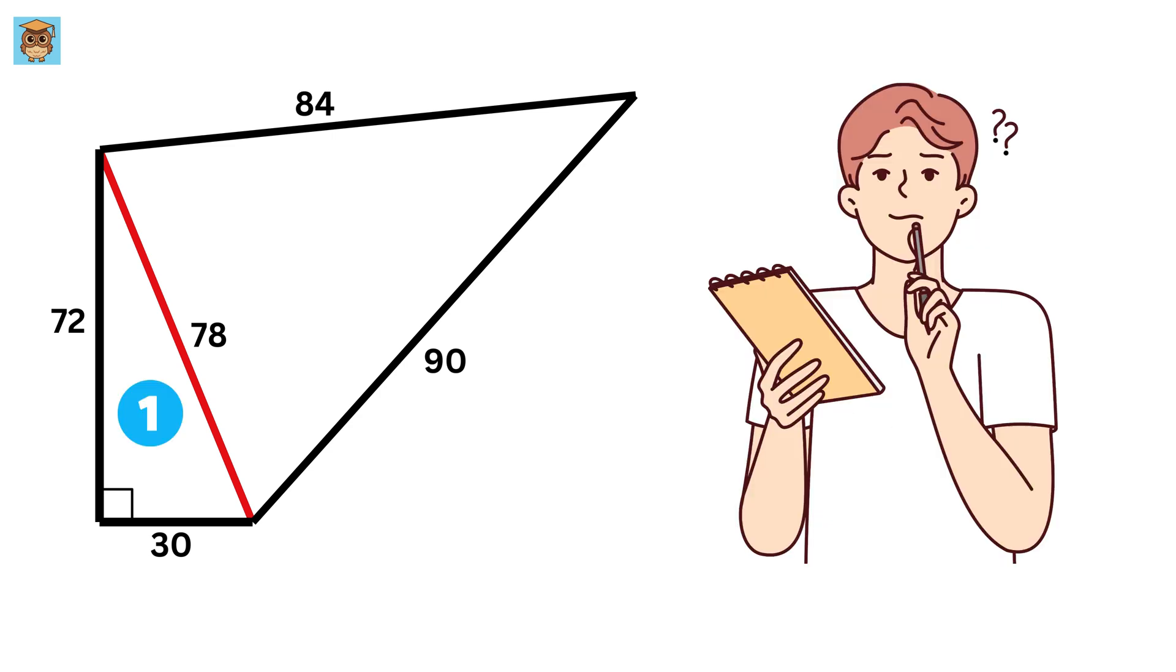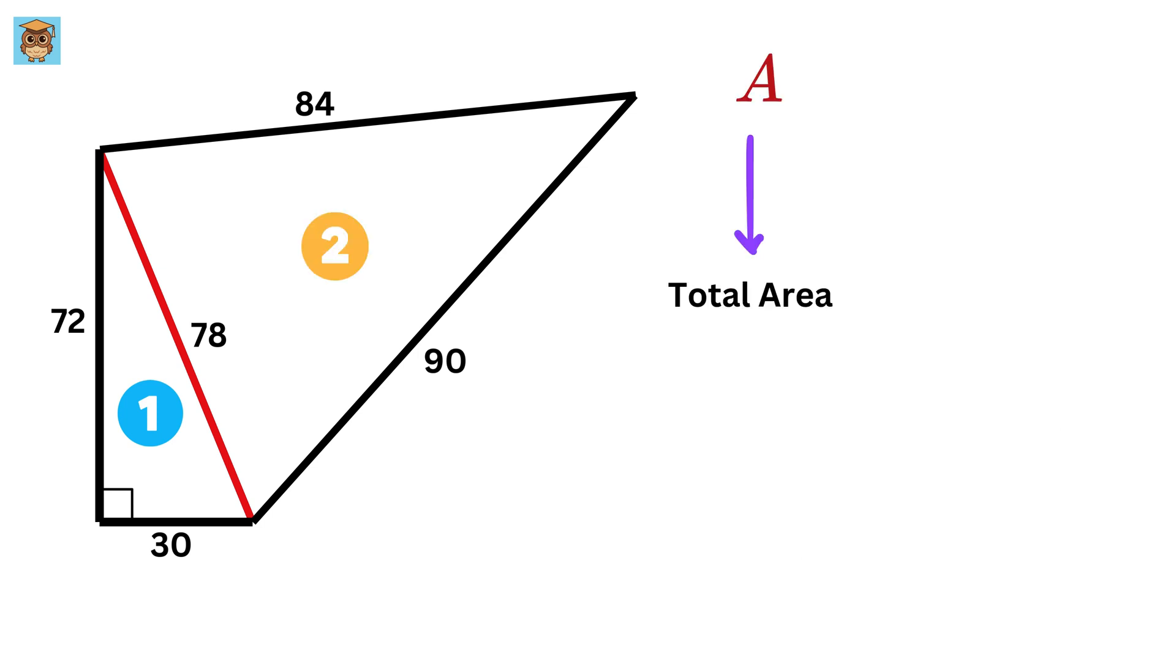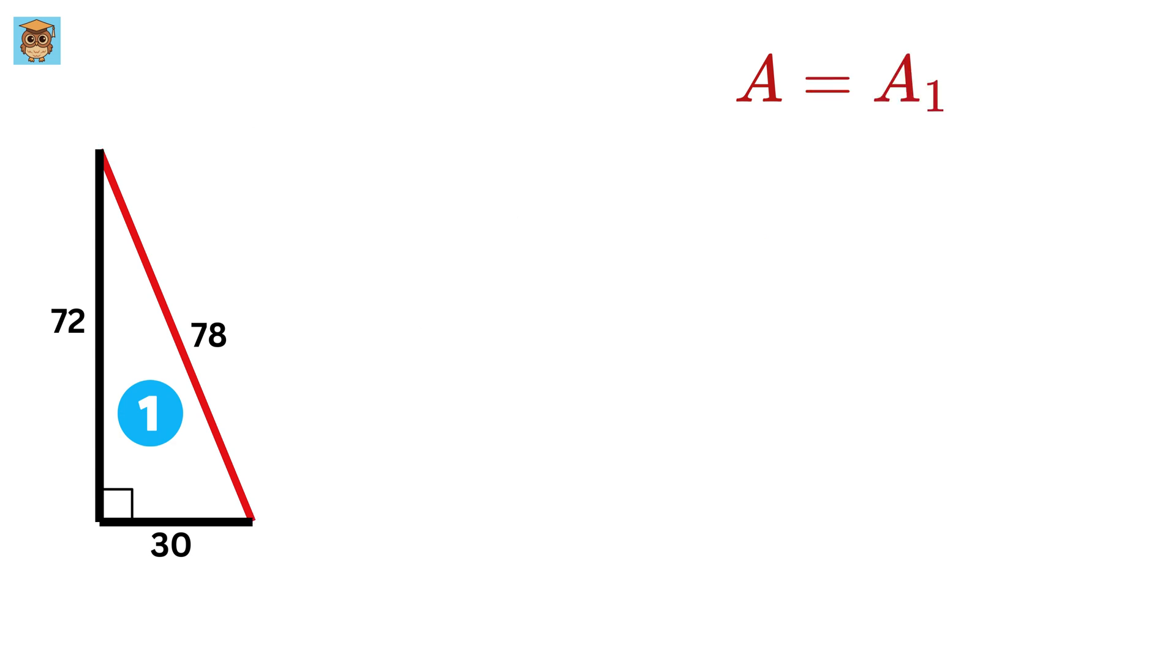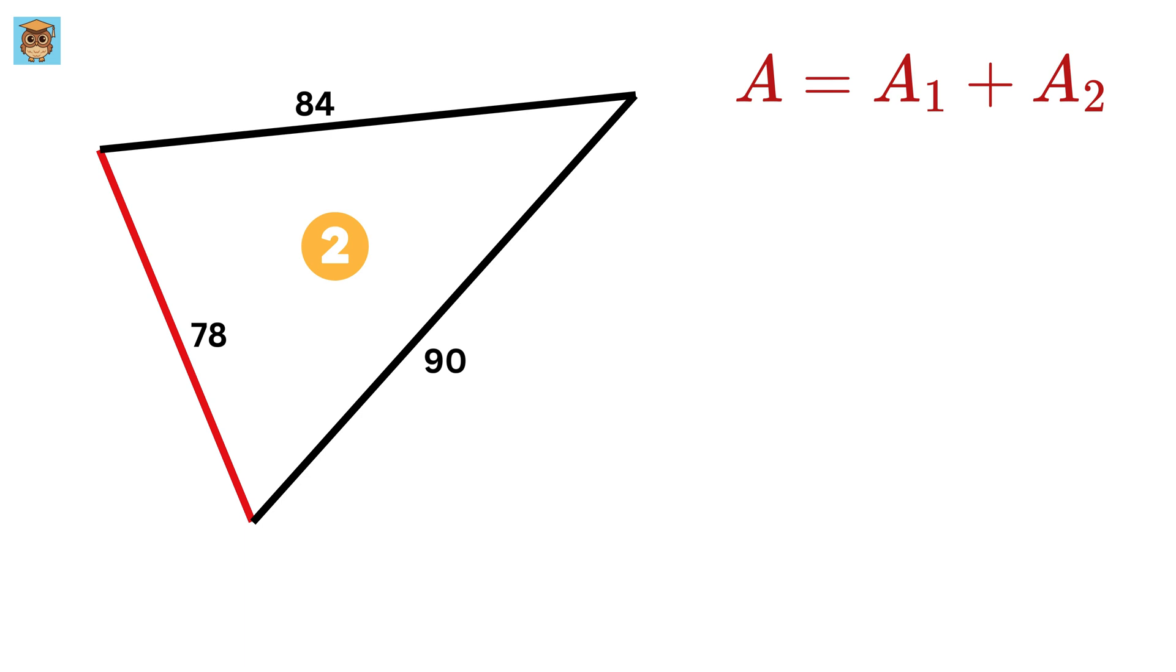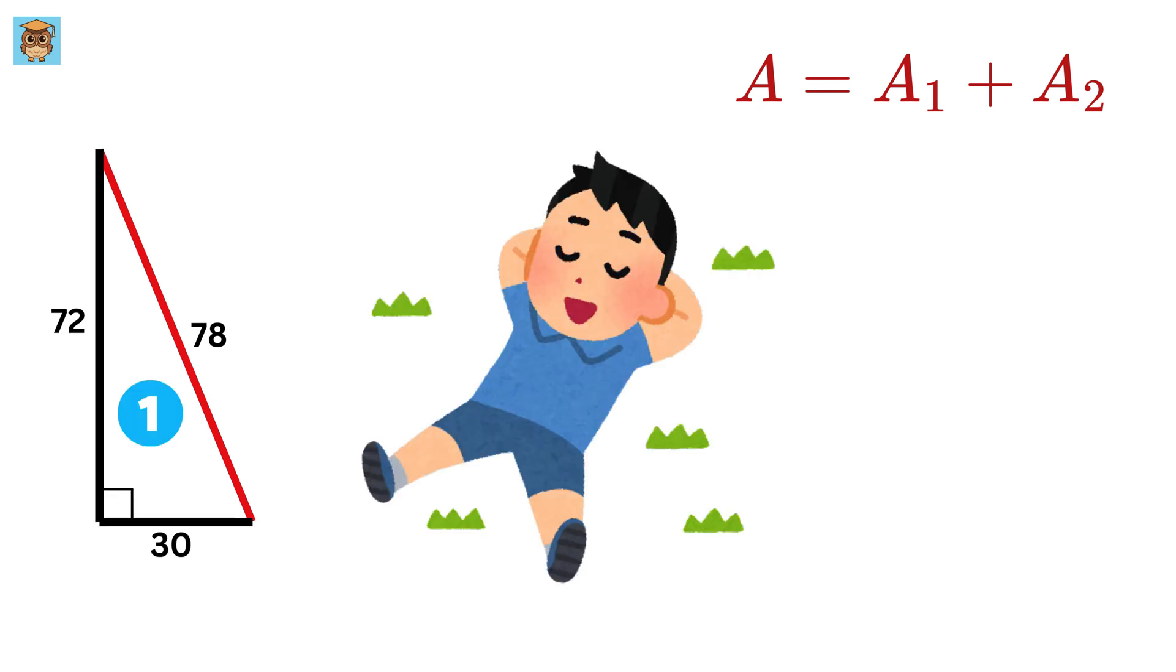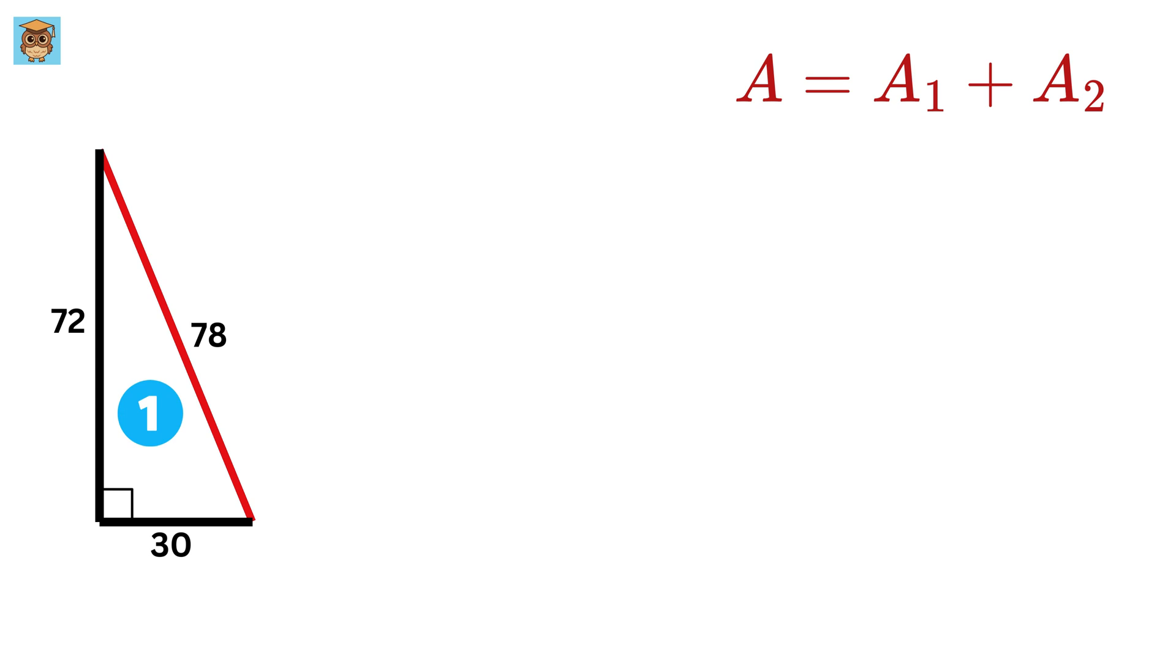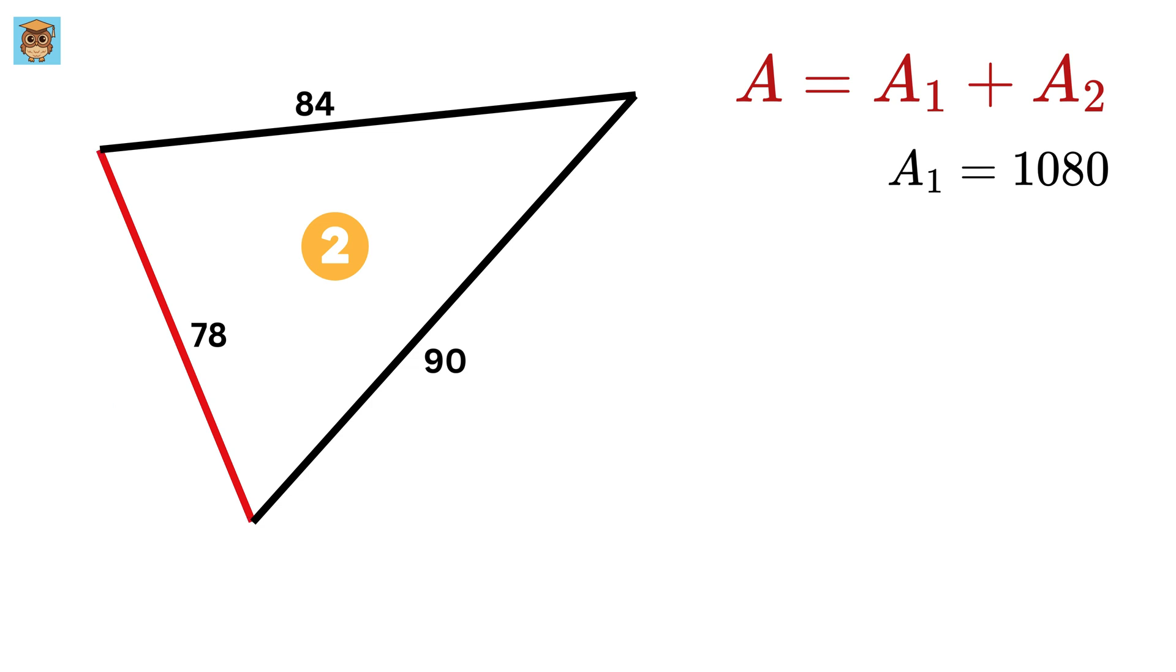Now how can we calculate the area of this quadrilateral? Let us label this triangle as 1 and this triangle as 2. So the area of this quadrilateral will be equal to the area of triangle 1 plus the area of triangle 2. Area of triangle 1 is easy to calculate because it is a right triangle, and thus its area will be this height of 72 times this base of 30 divided by 2, or 72 times 15, which is 1080 square units.